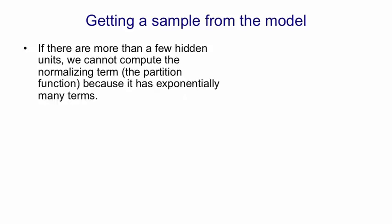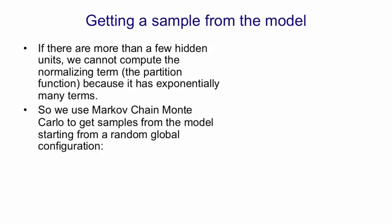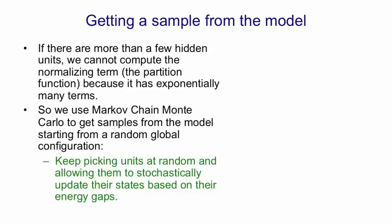So if there's more than a few hidden units, we can't actually compute that partition function. There's too many terms in it. But we can use Markov chain Monte Carlo to get samples from the model by starting from a random global configuration and then picking units at random and updating them stochastically based on their energy gaps.